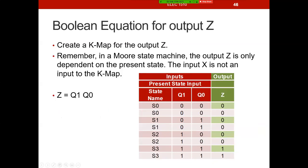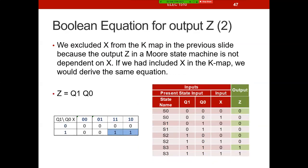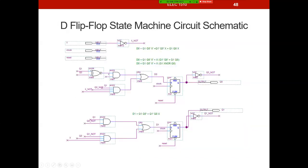And so now we have our Boolean expressions for D0, D1, and Z. Like I said, here's a slide that says if we leave X in and we do a K-map, you can see that X ends up dropping out Q1 and Q0. It should, because if we've done this right, our output is dependent on the present state only.